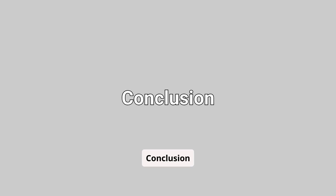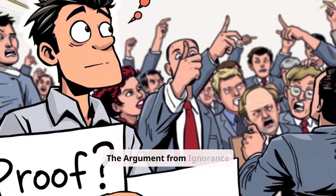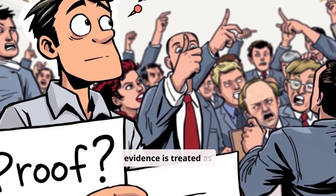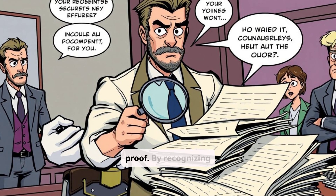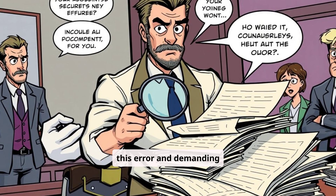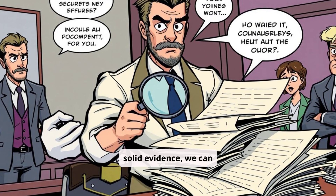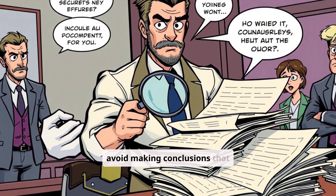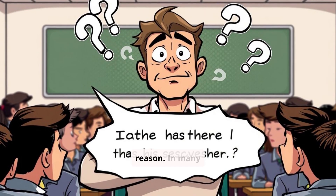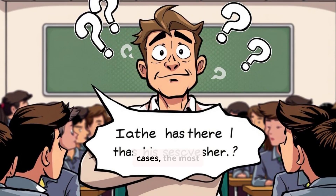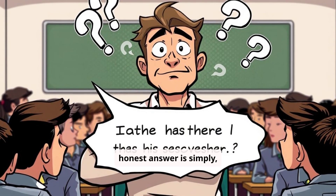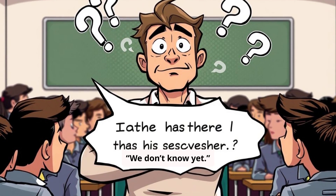Conclusion: The argument from ignorance fallacy occurs when a lack of evidence is treated as proof. By recognizing this error and demanding solid evidence, we can avoid making conclusions that rely on ignorance rather than reason. In many cases, the most honest answer is simply: we don't know yet.